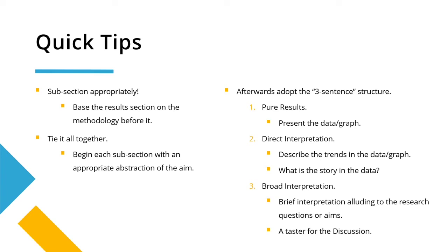Before we get into further resources, here are some quick tips to help improve your results section. Firstly, subsection appropriately — base the results section on the methodology before it. So if you have Experiment 1, Experiment 2, and Experiment 3 in your methodology, mirror this in your results so you can quickly jump between the methodology and results. Make sure you tie it all together. Begin each subsection with an appropriate abstraction of the aim — you don't have to copy it word for word, just say you're looking at the effectiveness or accuracy of the scanner. This helps refresh the reader and frame the conversation in your results section appropriately.